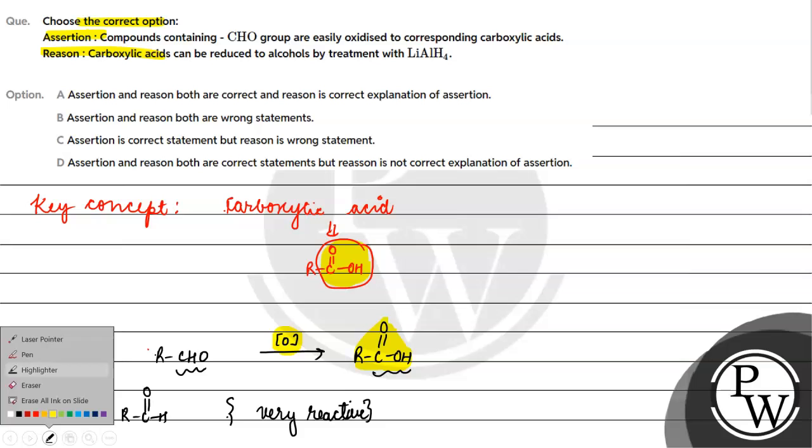So the assertion is correct. Carboxylic acid can be reduced to alcohols by treatment with LiAlH4. So this statement is correct. Carboxylic acid easily converts into alcohols.